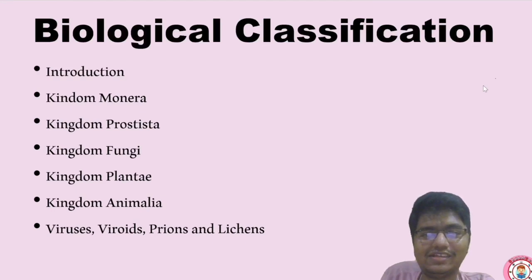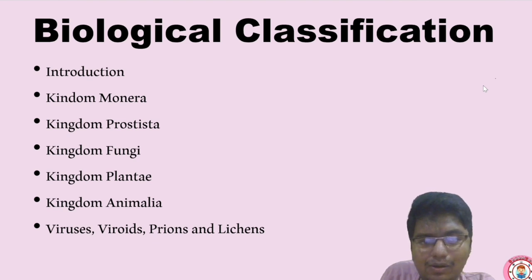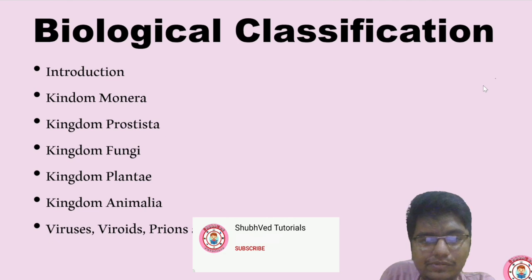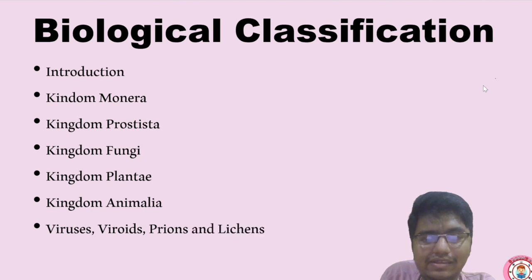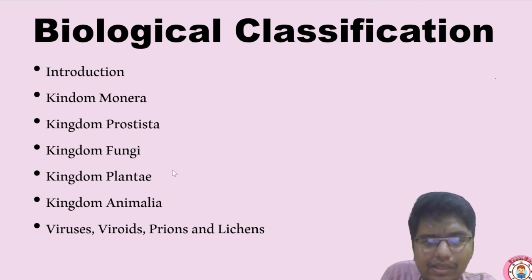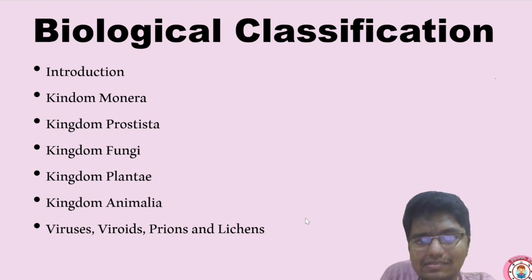Hello students, I am Subhamra from tutorials. We are doing Chapter 2 biological classification. Till now we have seen all the kingdoms — kingdom Monera, kingdom Protista, kingdom Fungi. These are the main kingdoms discussed in this chapter. Now the remaining things we are going to discuss today — those are the final things, last things from this chapter.